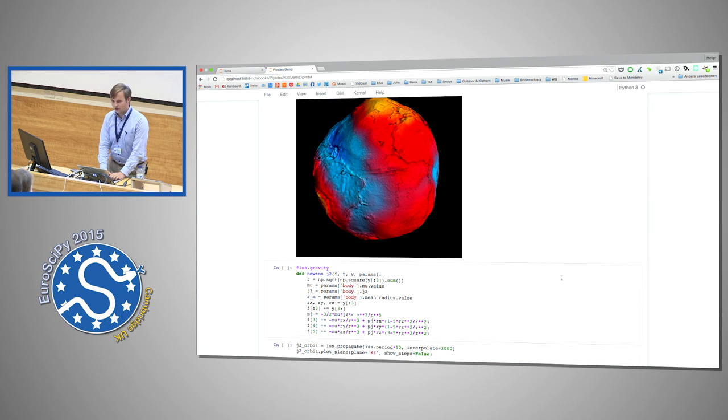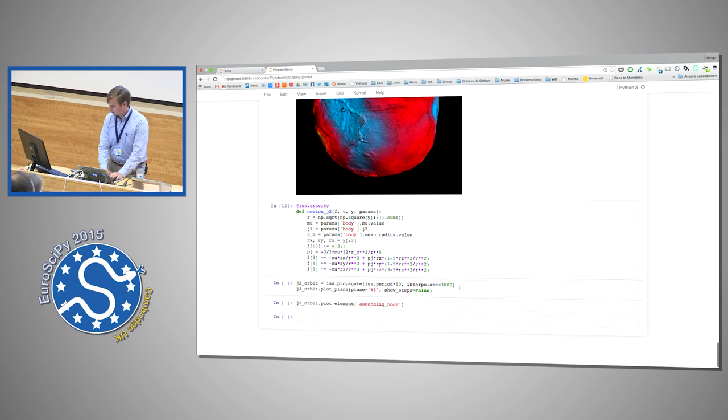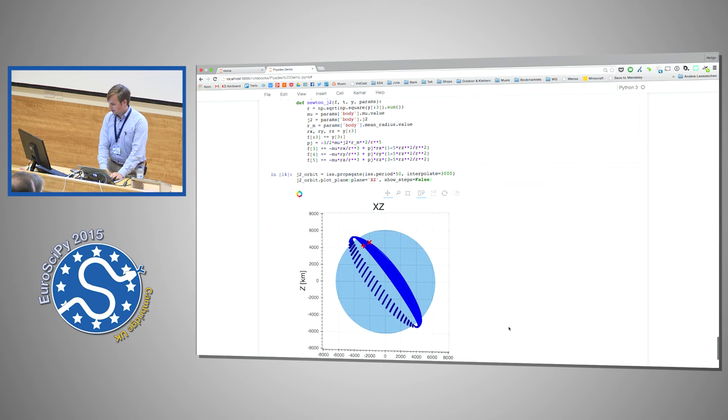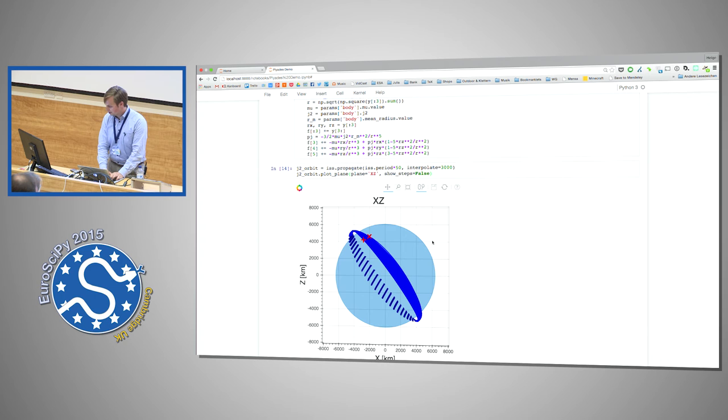So as I said, in reality the gravity potential of the Earth looks more like this lovely potato. And so we need to refine our force model. And what we do here is we introduce the so-called J2 term. And that takes into account the oblateness of the Earth, so that it looks more like an orange. And I really liked the decorator syntax, so I can just write my function here and plug it into the integrator like this. And now we do 50 revolutions of the ISS.